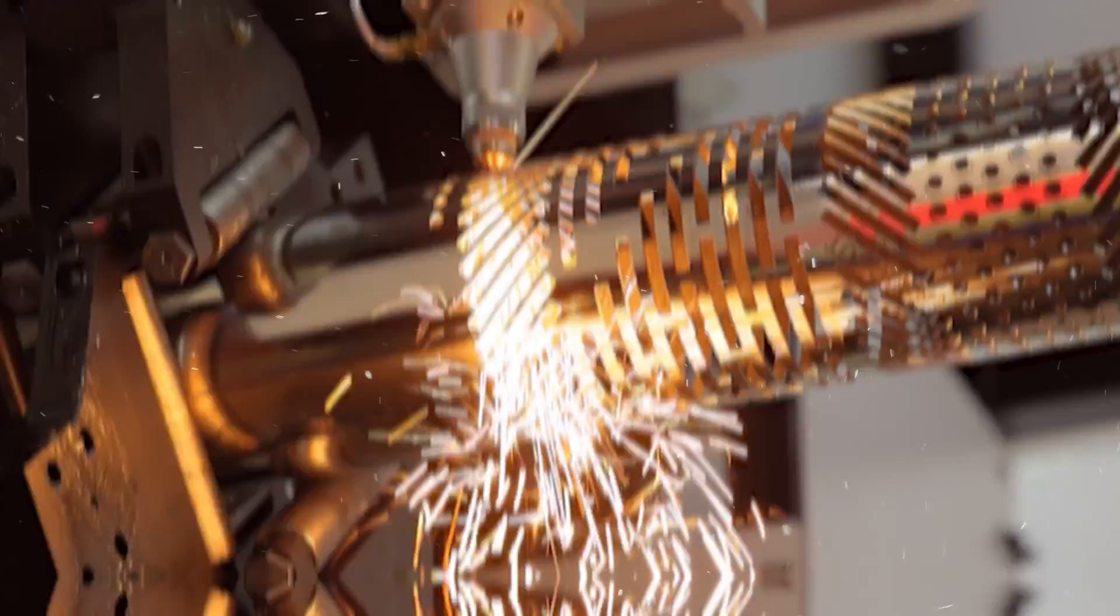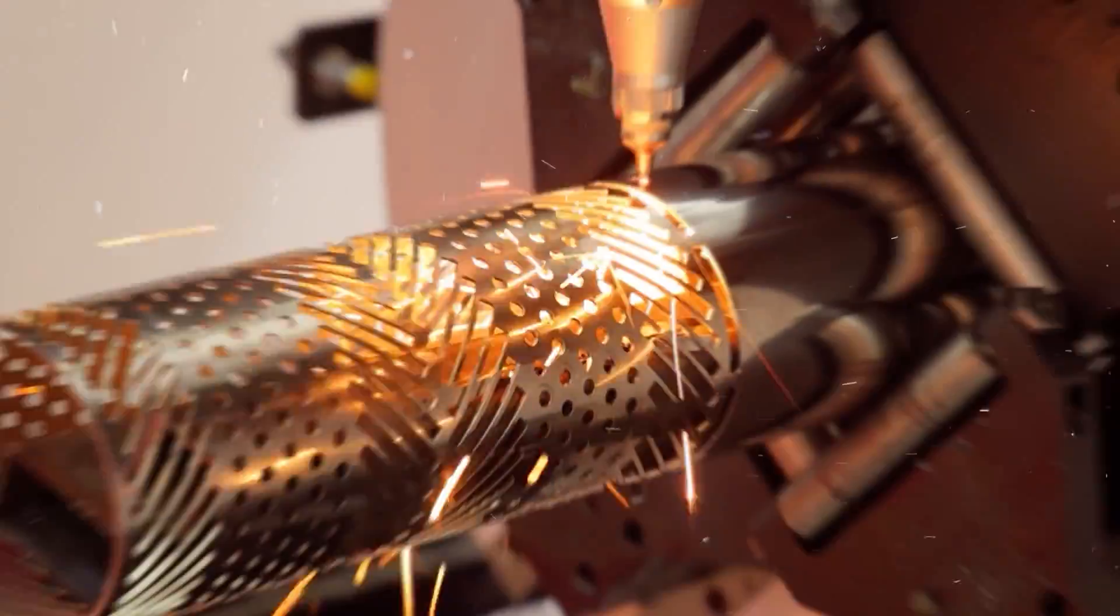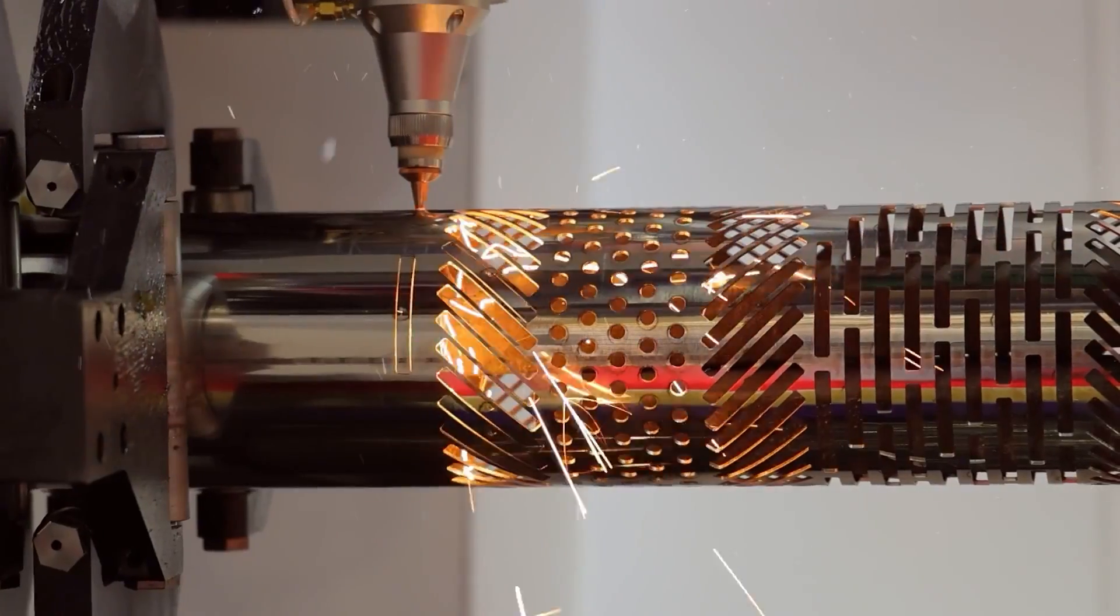These are the simplest and most affordable type of CNC milling machine. As I mentioned, they can move the cutting tool or workpiece left and right along the x-axis, in and out along the y-axis, and up and down along the z-axis.